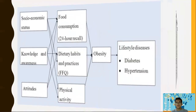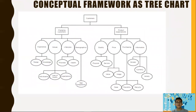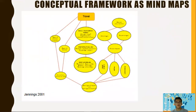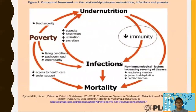Another form of conceptual framework is a tree chart, where there is a main concept and then underlying concepts that branch from it. Another form is a mind map, where we have one main concept and there are other sub-concepts that are interrelated with one another. For example, the main concept is under-nutrition, with other interrelated sub-concepts surrounding it.